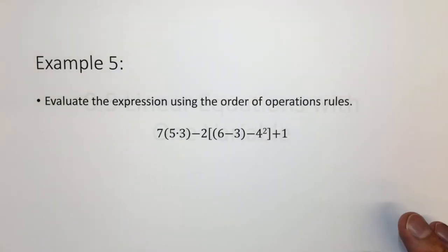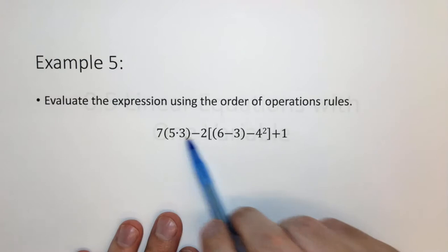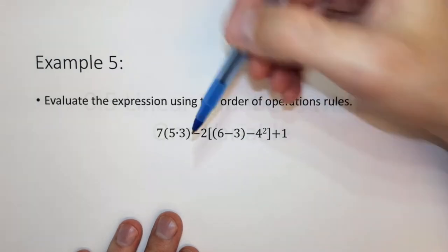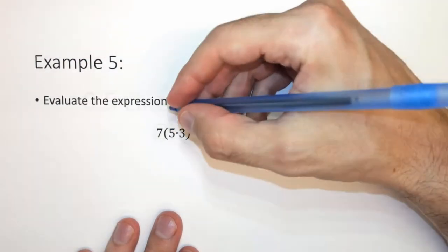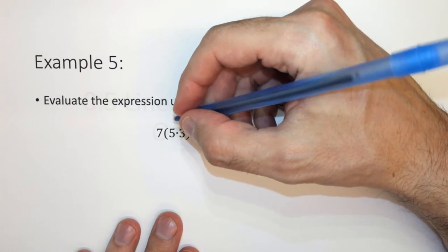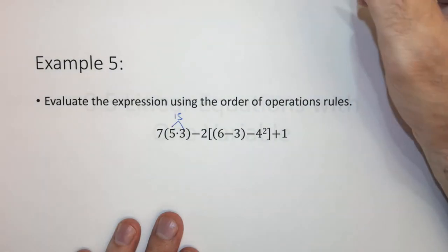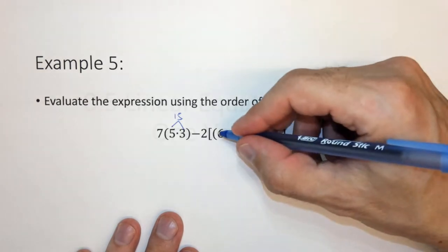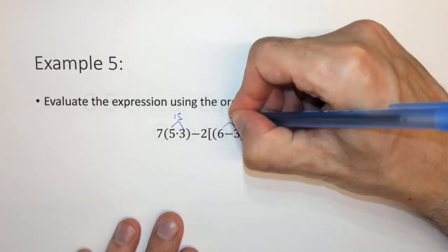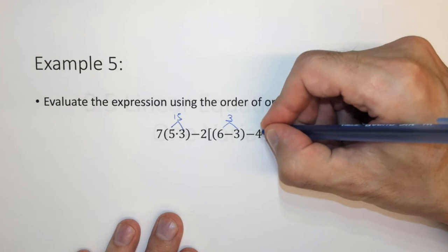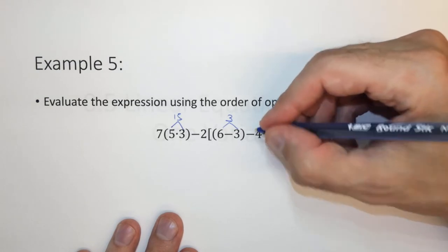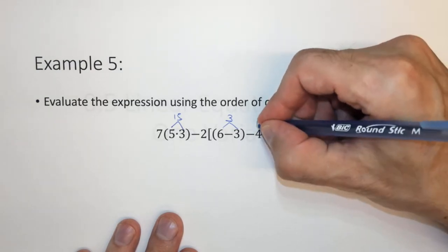For the next one, it's even more complicated because we have a little bit of everything going on. So in this case, we have several things inside parentheses slash brackets. So here we have something in parentheses. We have 5 times 3, which is 15. So we'll start with that. We have 6 minus 3, which is 3. And we have 4 squared, which is 16.